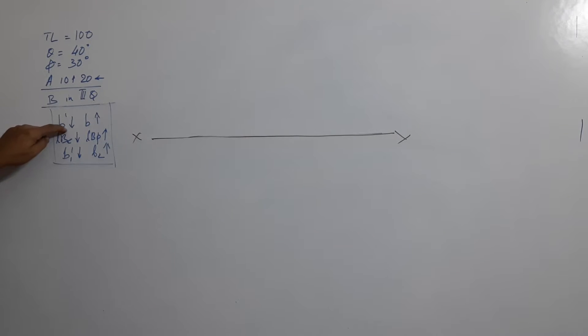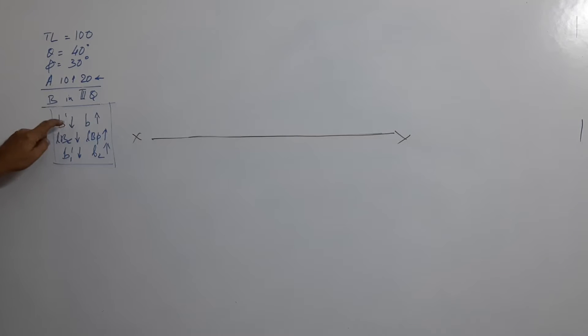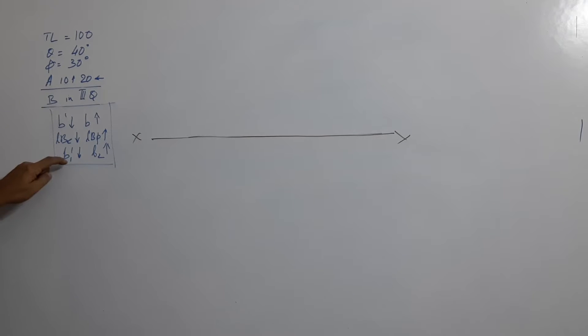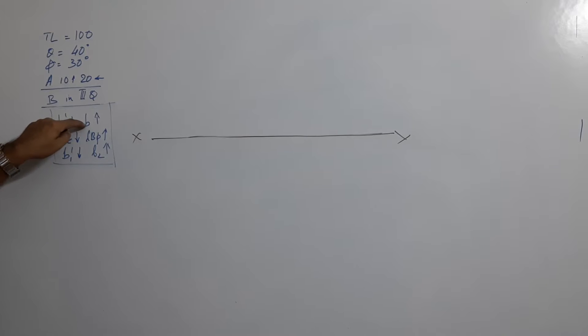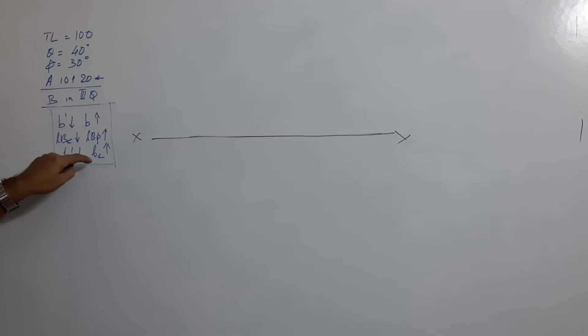When B is in the third quarter, b' will be below XY and b will be above XY. When b' is below XY, lb will be below XY and b1' will be below XY. When b is above XY, lbp will be above XY and b2 will be above XY.